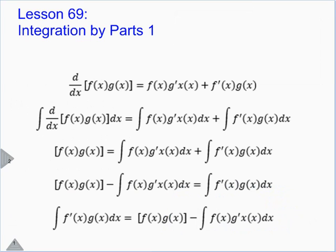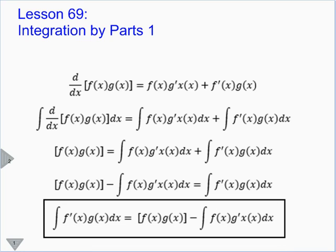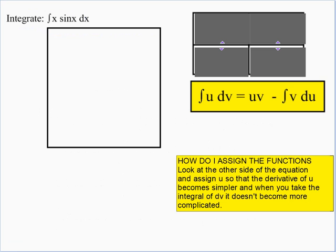We could also write this in function notation — same idea, still using the product rule: first times the derivative of the second plus second times the derivative of the first. You take the integral of both sides, solve for one term, and you get your integration by parts formula. So let's go ahead and take a look at a couple of examples.